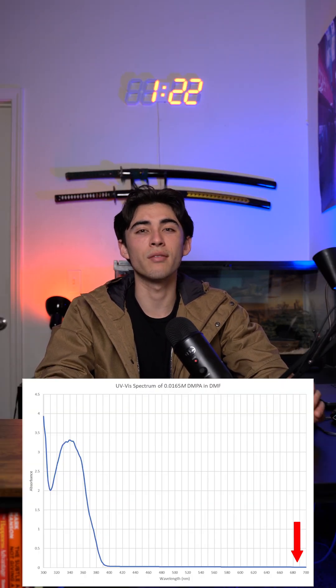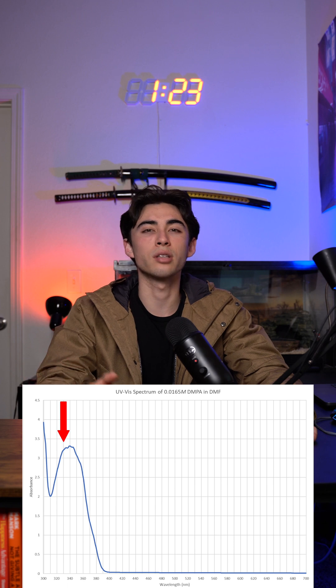Based on the photo initiator's absorbance spectrum, we can determine what wavelength of light will activate the reaction. Red light at a wavelength around 700 nanometers will have no effect on the DMPA initiator due to its low absorbance. UV, on the other hand, has a high absorbance, allowing the photo initiator to undergo a chemical change, triggering the photopolymerization reaction.